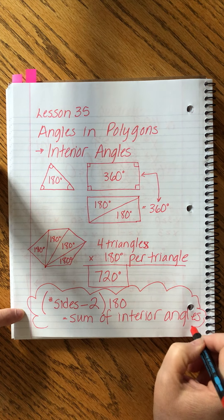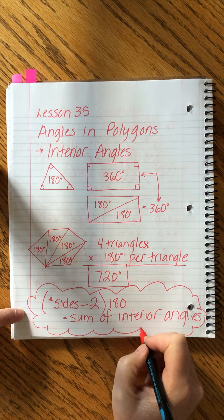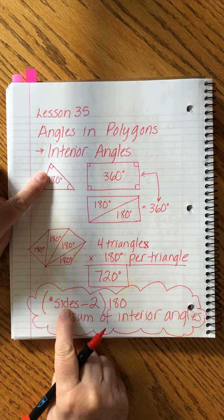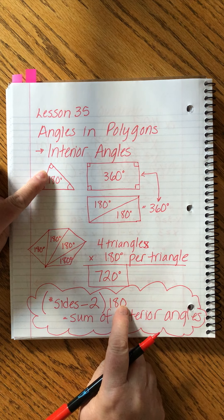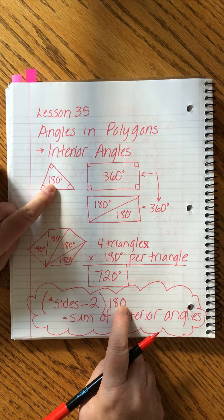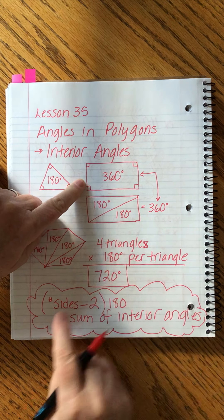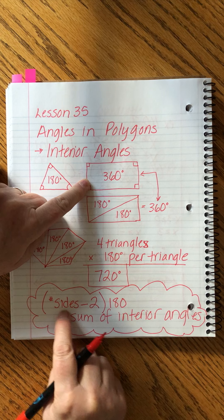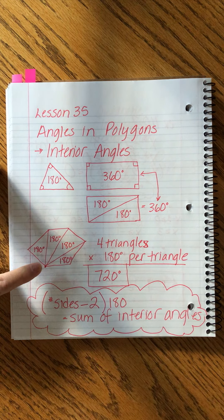We say the number of sides minus 2 times 180 will give us the sum of interior angles. And we'll check this to make sure this formula actually makes sense. Let's try it on our triangle. The number of sides a triangle has is 3. 3 minus 2 is 1. 1 times 180 is 180. All right, that worked. How about a square? The number of sides is 4. 4 minus 2 is 2. 2 times 180 is 360. It's working.